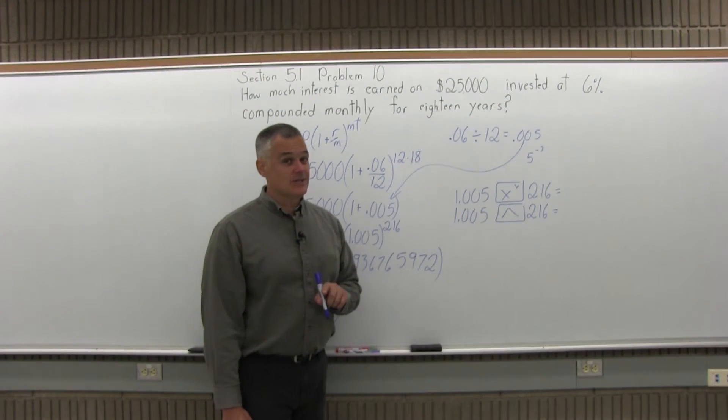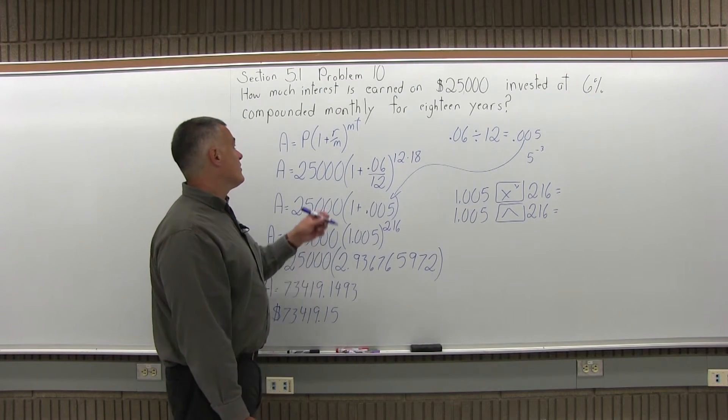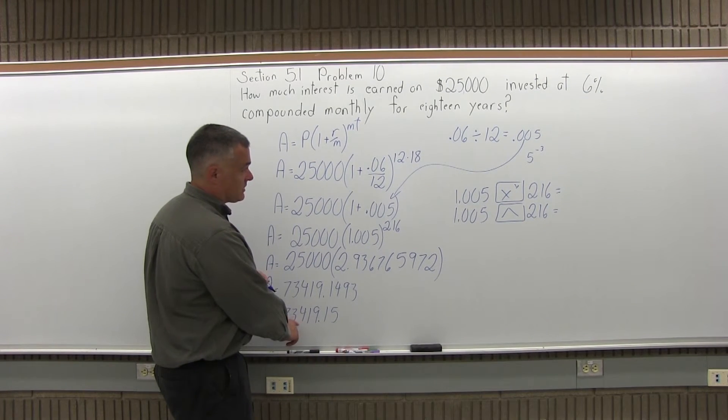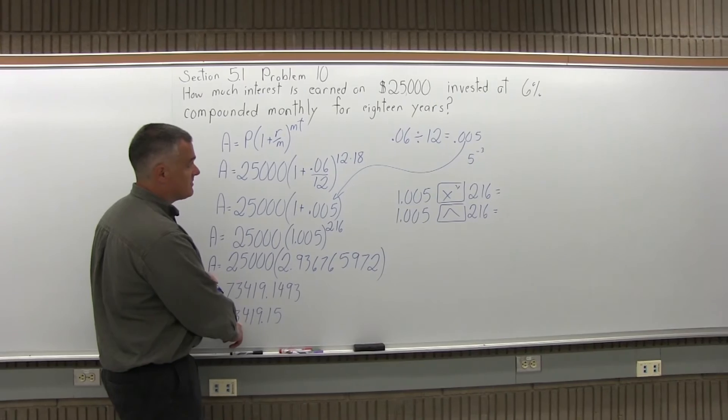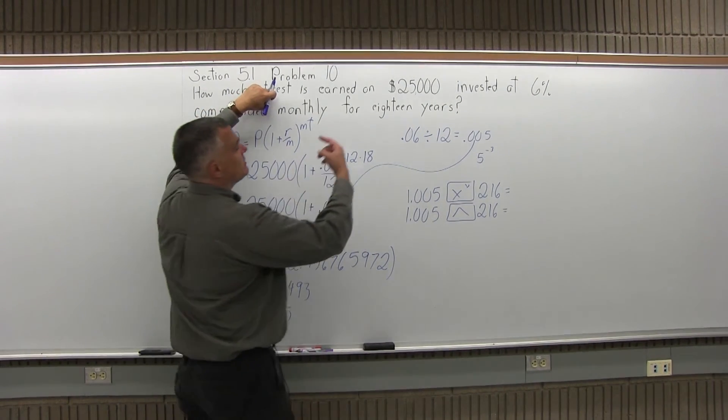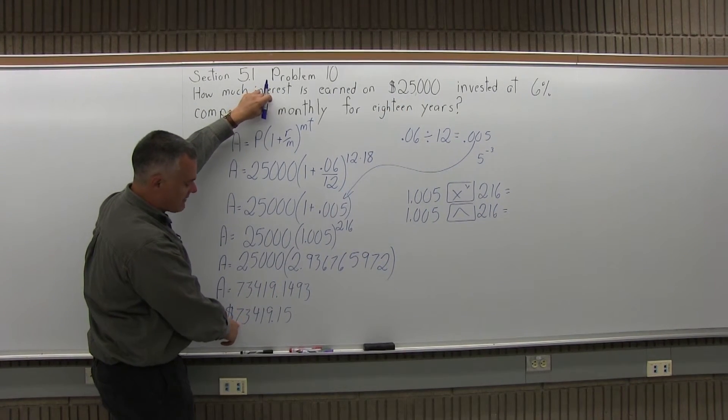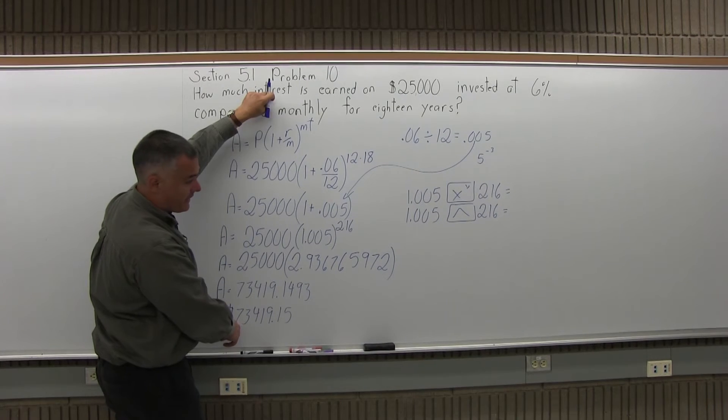Now again, that's not the answer. The question didn't say what's the total amount in the account after 18 years, because that's what the answer I have here of $73,000 is telling me. The question said how much interest.